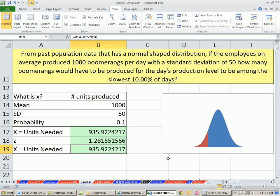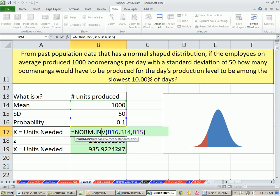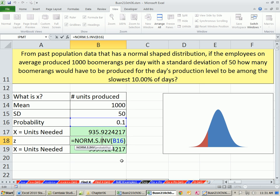In this video, we saw how to calculate an X given a probability from a normal distribution. We used NORM.INV to get an X and NORM.S.INV to get a Z. In the next video, we'll see three different examples of calculating probabilities from the bell curve. See you next video.